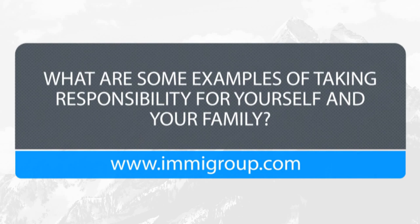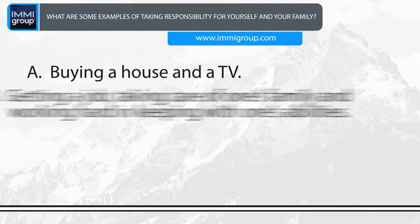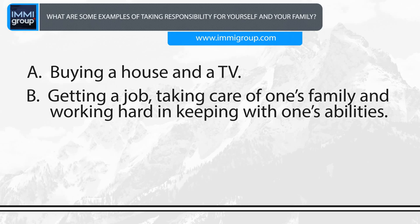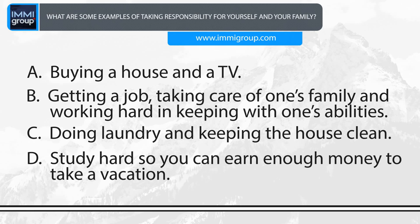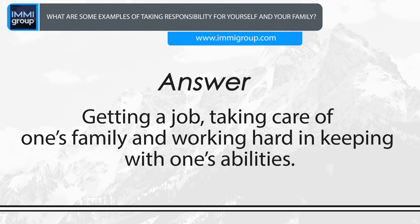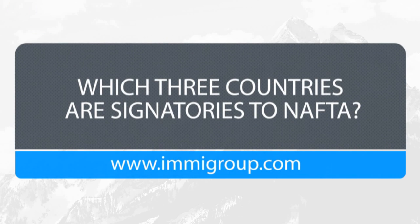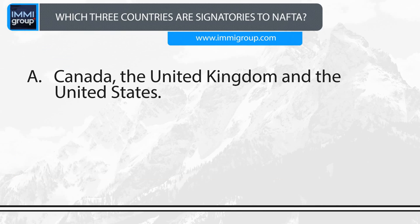What are some examples of taking responsibility for yourself and your family? A. Buying a house and a TV. B. Getting a job, taking care of one's family, and working hard in keeping with one's abilities. C. Doing laundry and keeping the house clean. D. Studying hard so you can earn enough money to take a vacation. Answer: Getting a job, taking care of one's family, and working hard in keeping with one's abilities.